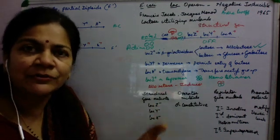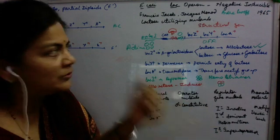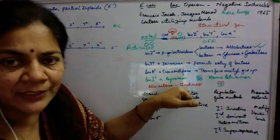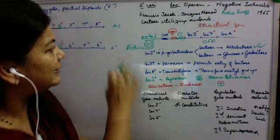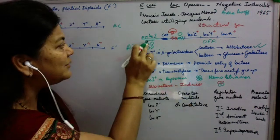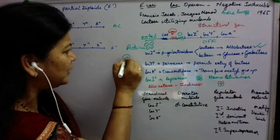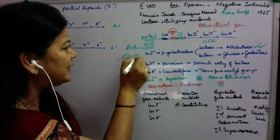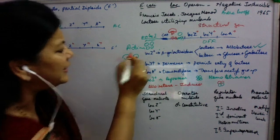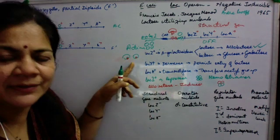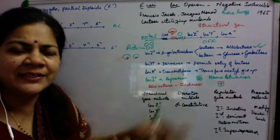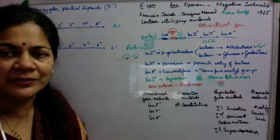The Lac Operon needs to be induced when lactose is present in the medium. The inducer is allolactose. When allolactose binds with the repressor protein, it changes its conformation — this is an allosteric conformational change. Once this conformation is changed, the repressor cannot go and bind to the operator site, so the operon turns on.